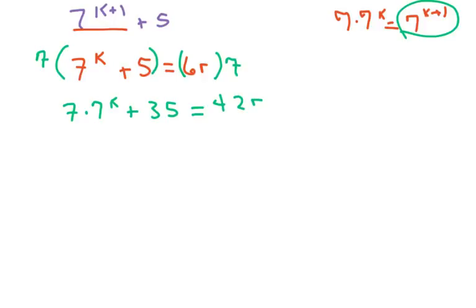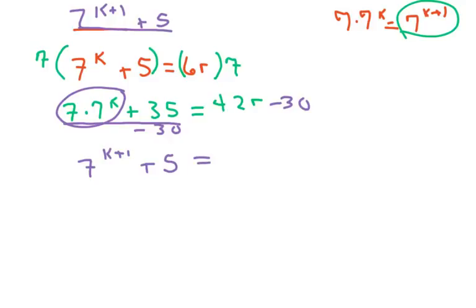Now what I want to do is have a 5 here. So what I'm going to do is just subtract 30 from both sides. So on this side, we're going to get 7 to the k plus 1, I just rewrote that, plus 5, which is what we wanted, equals this.